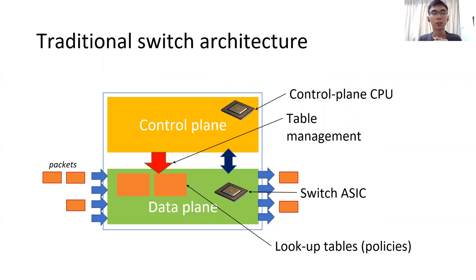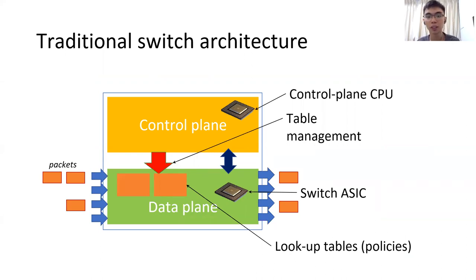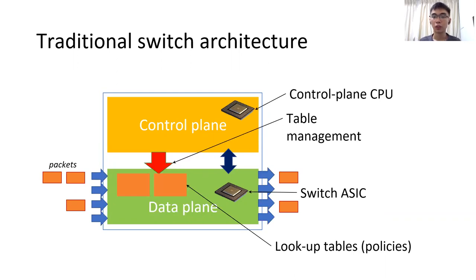The control plane and data plane are tightly coupled with each other. The feature sets of the control plane are affected by what is available down in the data plane. If you take any vendor for example, the higher the price point, basically you get a switch with more feature sets and a more complex ASIC. That means your switch can support more features and protocols. Traditionally, all the switches have to be configured in a distributed manner, meaning you have to go through all the switches manually to apply the corresponding configurations.